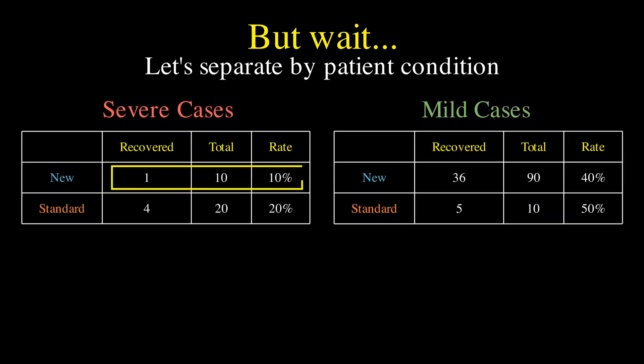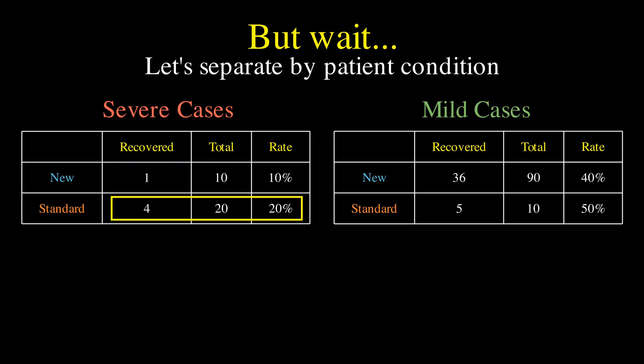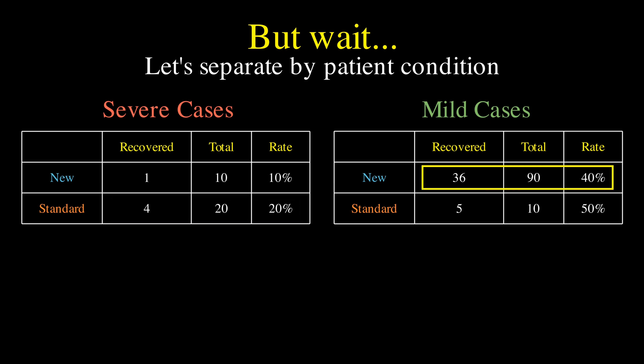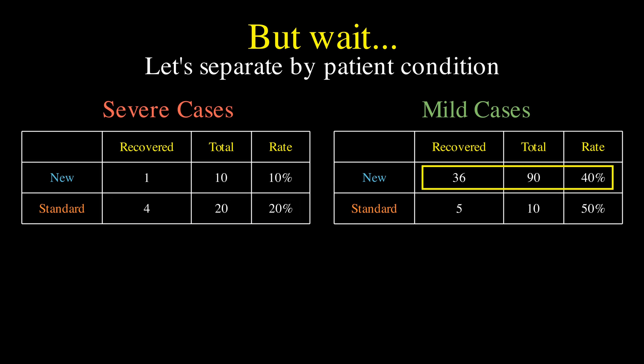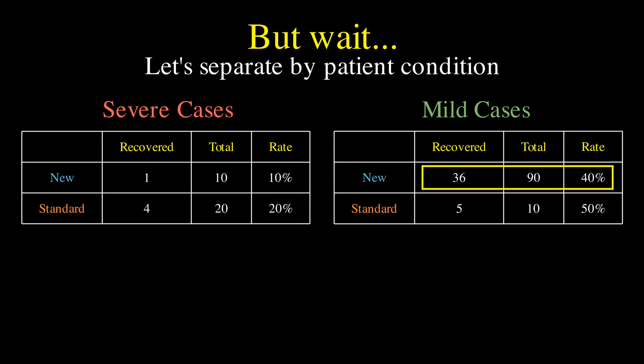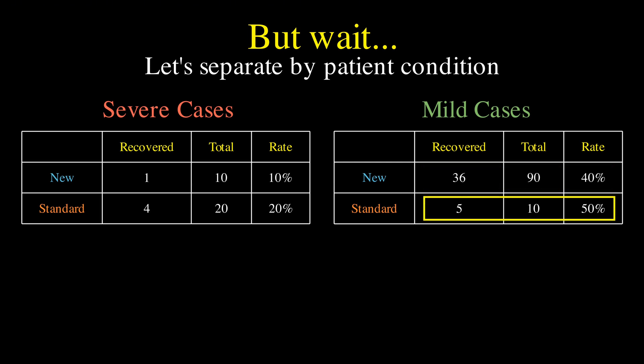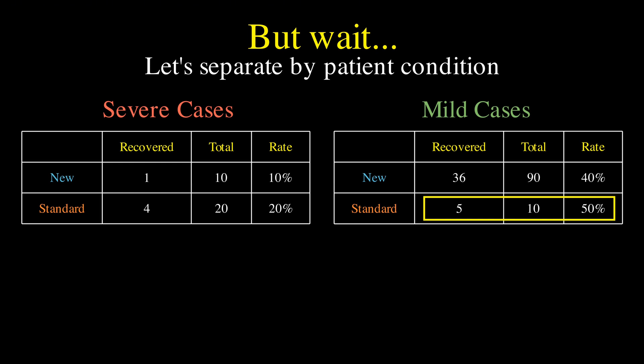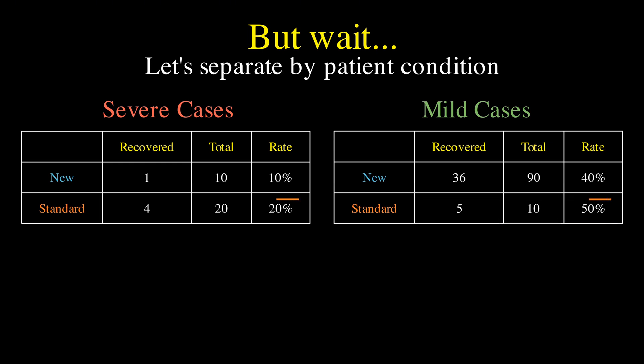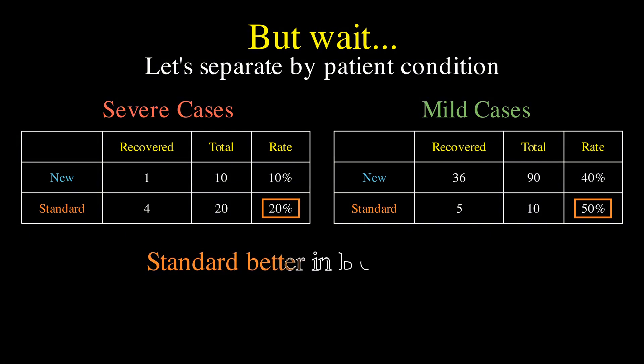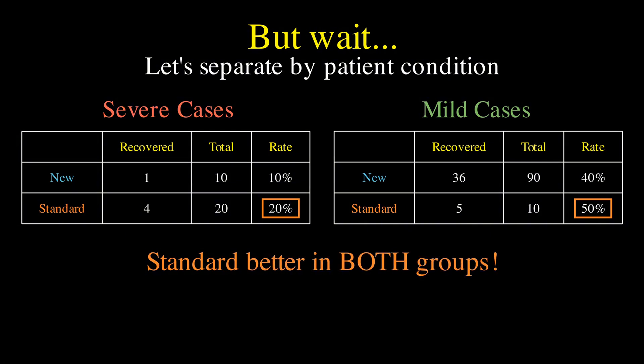Among severe cases, only 1 out of 10 patients recovered with the new drug, that's 10%, while 4 out of 20 recovered with standard treatment, that's 20%. Among mild cases, 36 out of 90 patients recovered with the new drug, that's 40%, while 5 out of 10 recovered with standard treatment, that's 50%. In both severe and mild cases, the standard treatment actually performs better than the new drug.